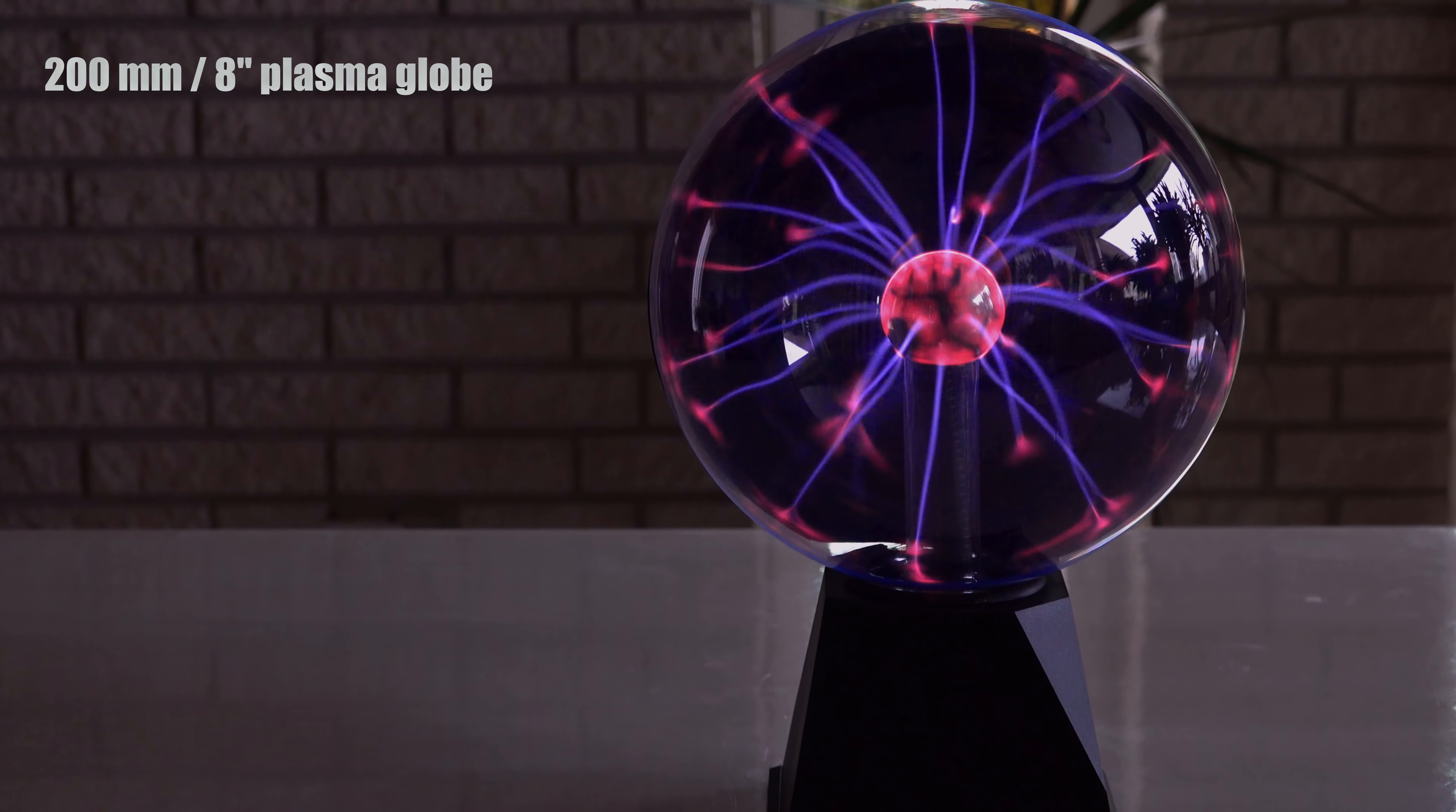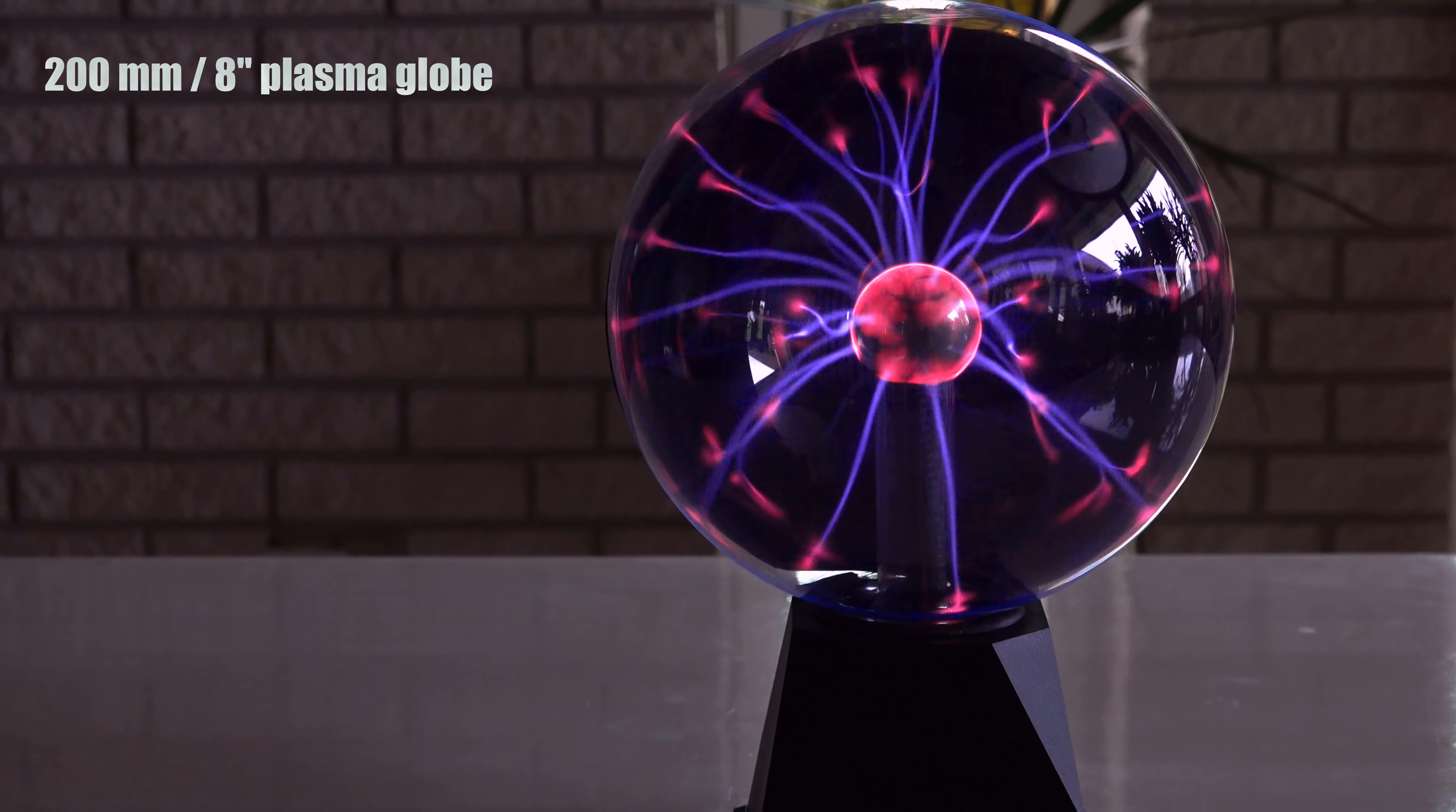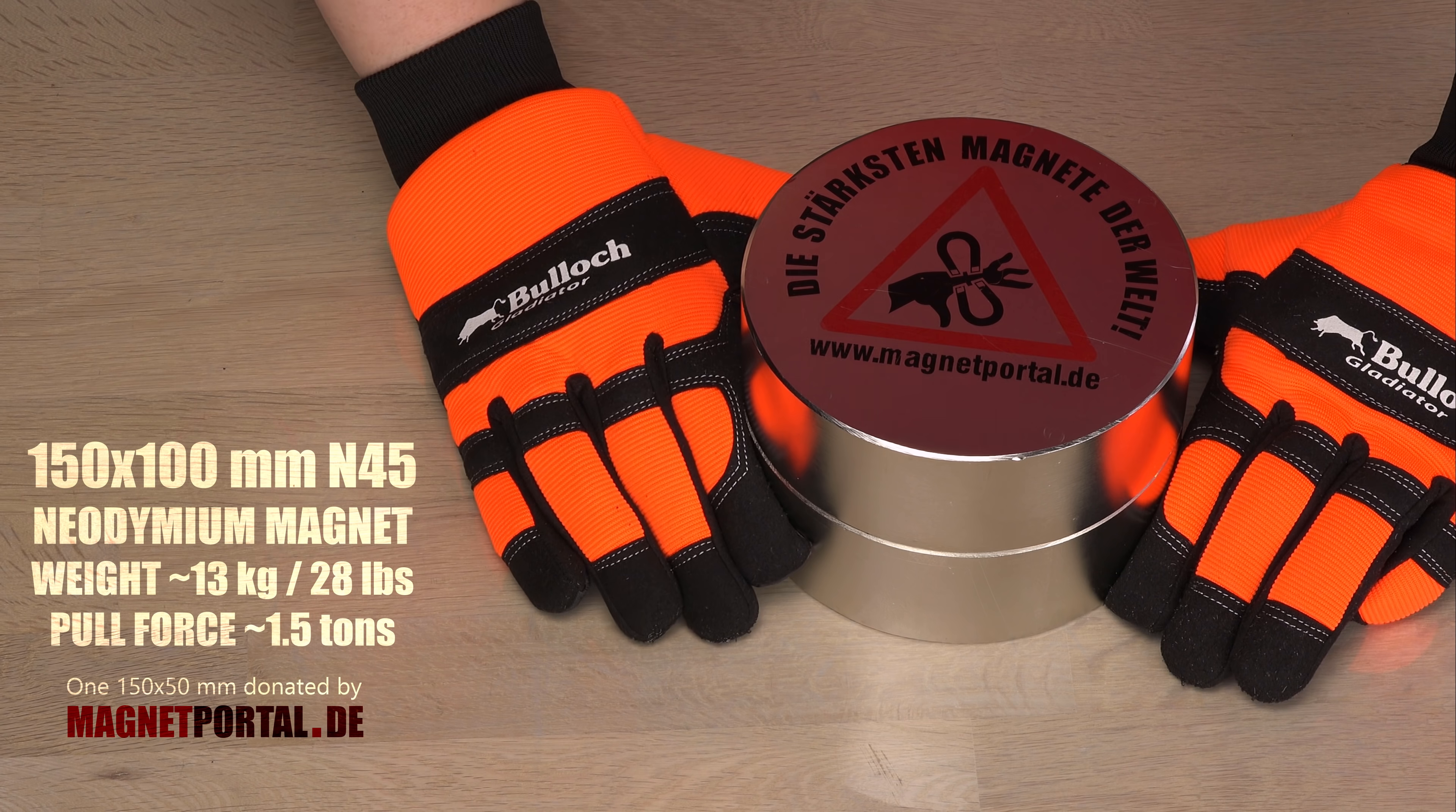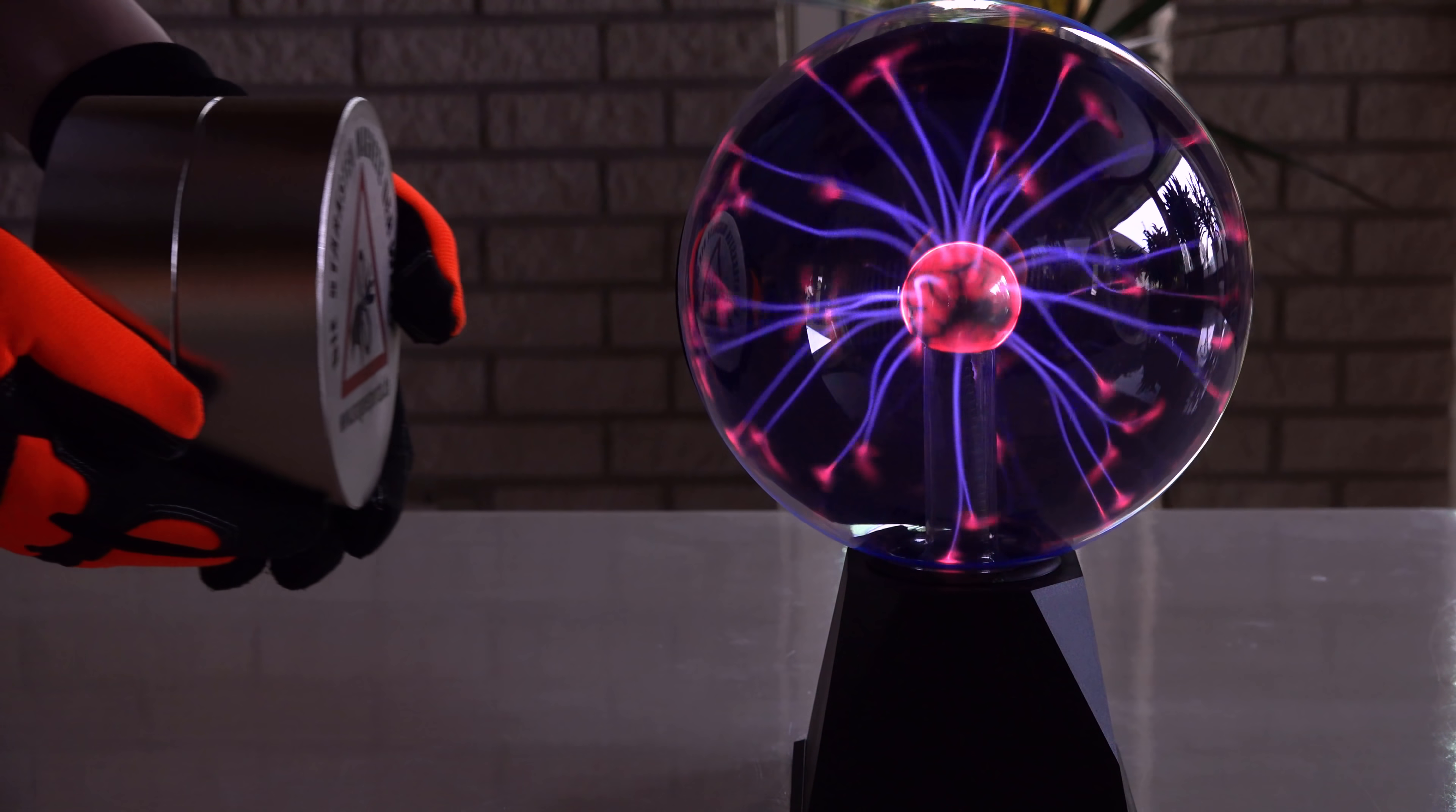Here we have one of my plasma balls doing its thing. Now let's see what happens to the plasma as I put my biggest magnet near it. A monster of a neodymium magnet weighing in at 13 kg. Will we see any bending of the plasma streamers?